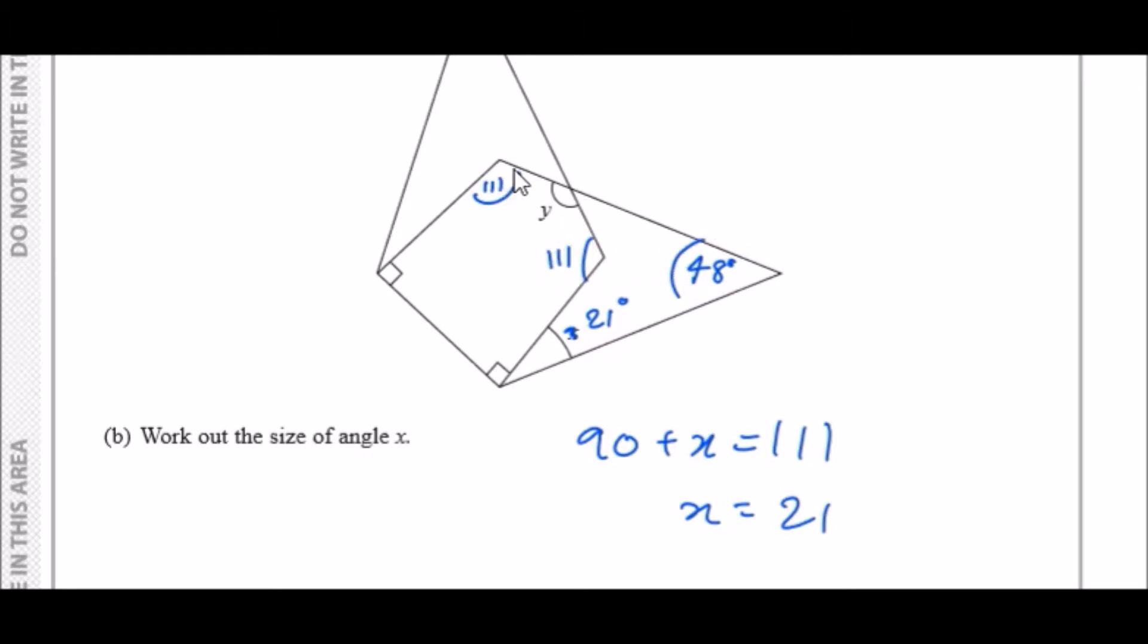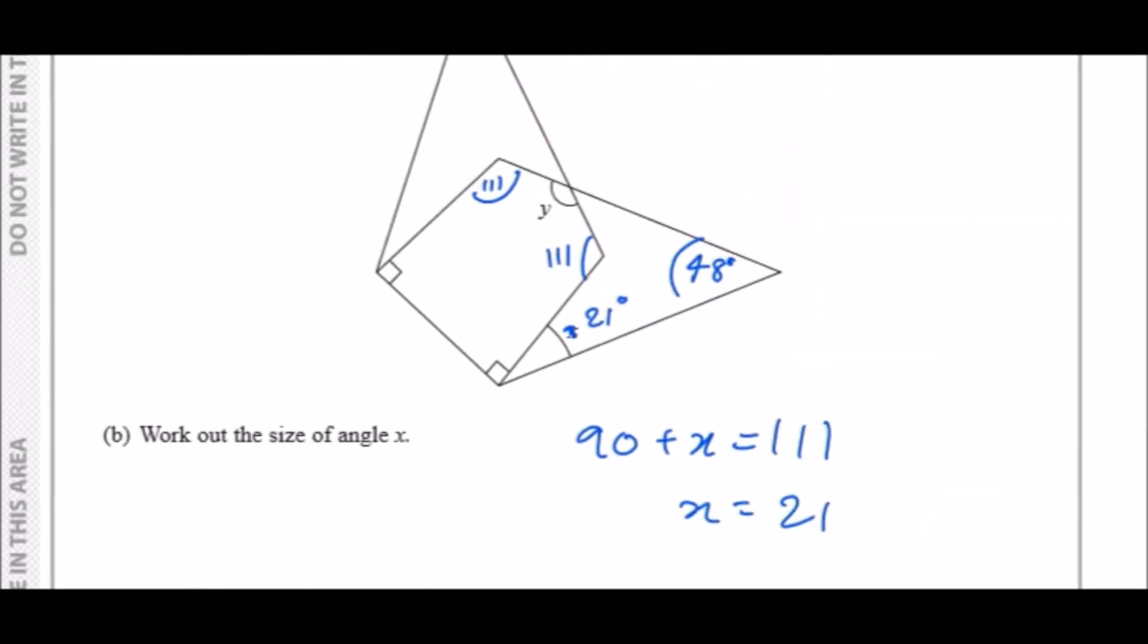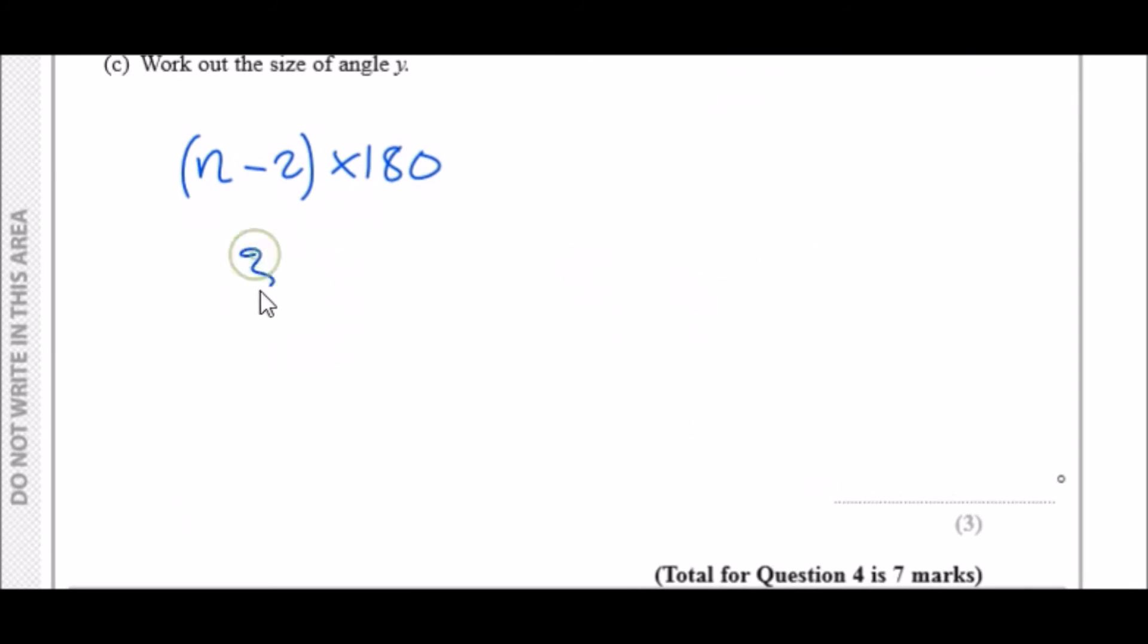One thing to know is that this shape here is actually a pentagon, so it's a five-sided shape. If you don't know the sum of the interior angles of a pentagon, you can use this formula: n (the number of sides) minus 2 times 180. Pentagon is five-sided, so n is 5. 5 minus 2 is 3 times 180 should give us 540 degrees. This means that all angles must add up to 540.